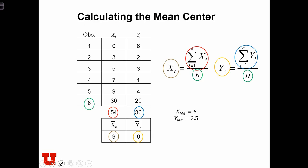So here's an example. What we've done is we've added one more point to the point distribution that we had before. And we've put this point way off the grid. x is equal to 30 and y is equal to 20. When we recalculate the mean center, we find that the mean center is located at 9, 6. And if you recall, the mean center before was located somewhere near 4, 3.